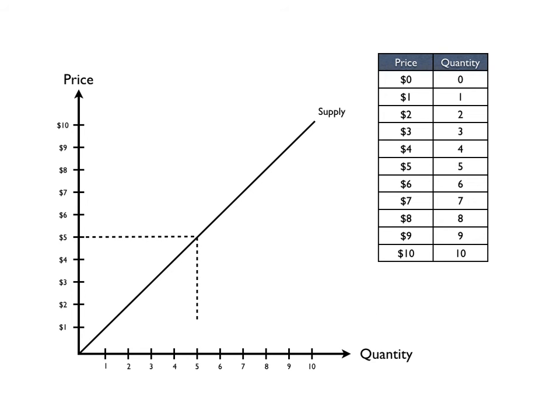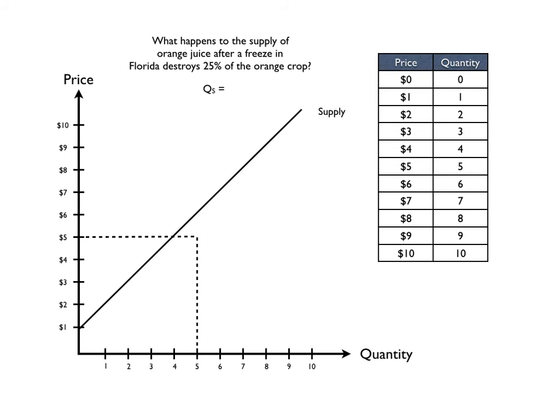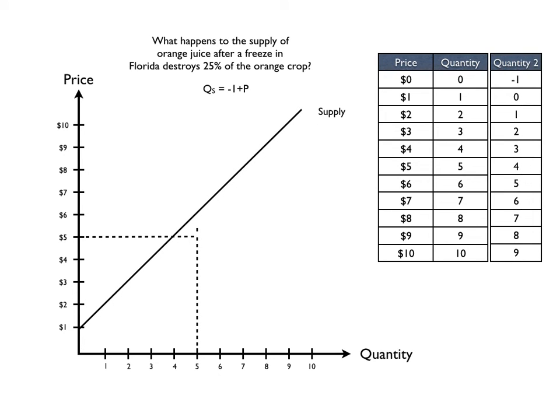So again, let's take a look at this instance here. What happens to the supply of orange juice after a freeze in Florida destroys 25% of the orange crop? There'd be fewer oranges and what we would have would be a higher price. Therefore, that's got to be a shift upward in the supply curve, and for any given quantity, we will have a higher price for orange juice.